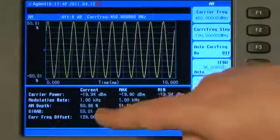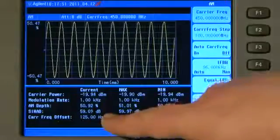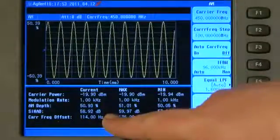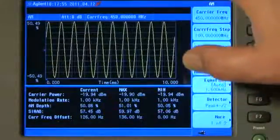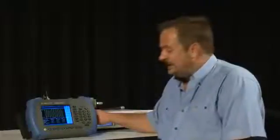the SINAD, and again, the carrier offset. That is the error in carrier frequency from what we have set, 450 MHz, to what the transmitter is actually generating.